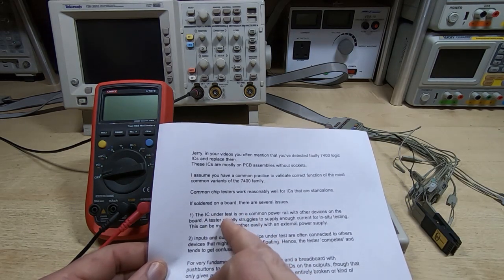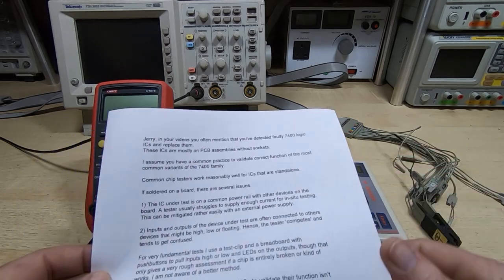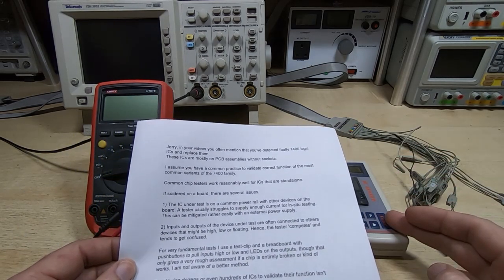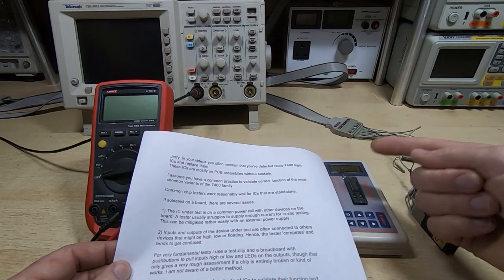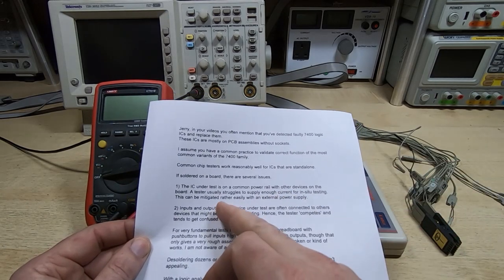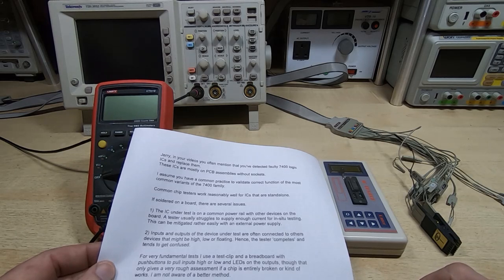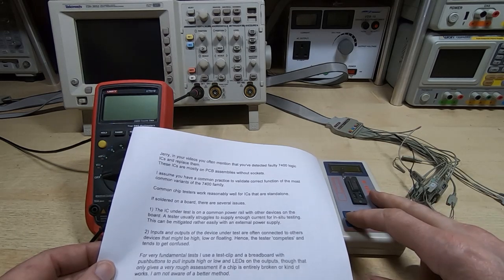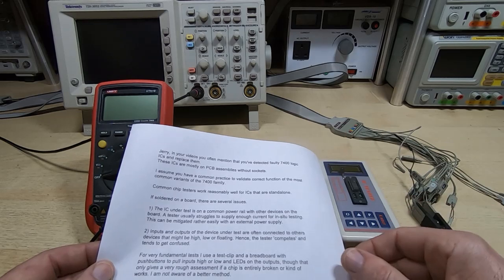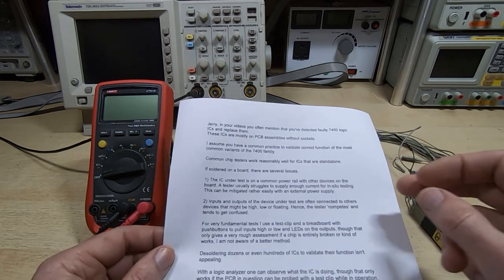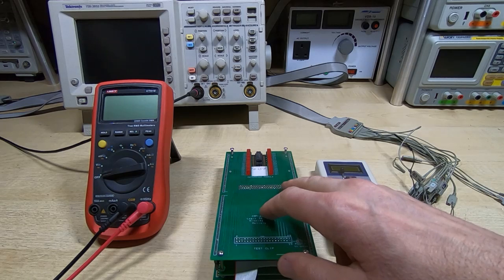If it doesn't, then we start getting into the more interesting aspects of the repair. So the saying here that if the device is soldered to a board, there are several issues. And that common testers such as this don't really work if the devices are in a board, which is very true. You can't really use this with the device in the board. Even if you make up a connector, then this won't work. And as it says here, because everything's on common power rails, it's kind of impossible for these devices to properly test an IC in circuit.